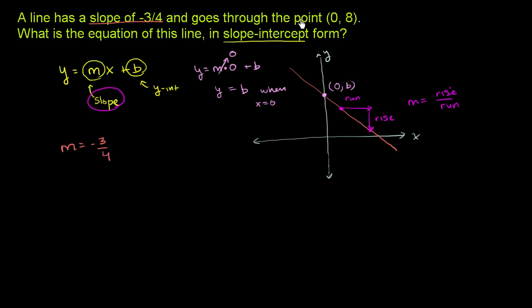And they tell us that the line goes through the point 0 comma 8. They tell us we go through the point 0 comma 8. Notice x is 0. So we're on the y-axis. When x is 0, we're on the y-axis. So this is our y-intercept.